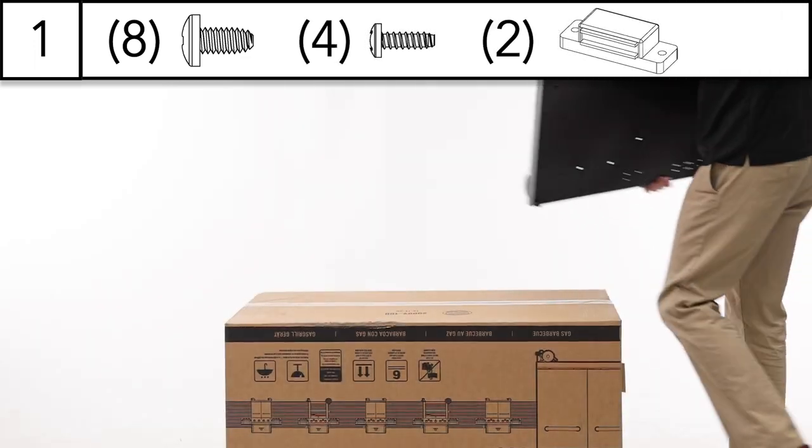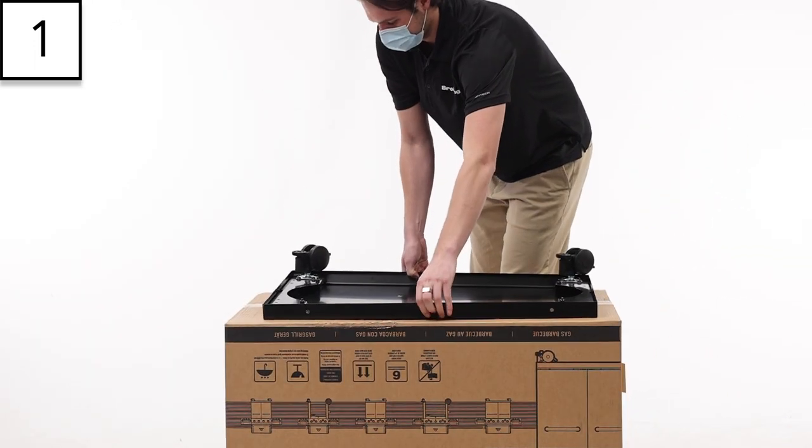Step 1: Install the locking casters to the bottom of the base using the screws provided.